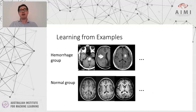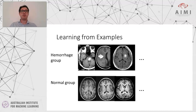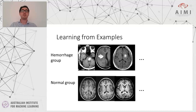Another concept that I want to show you is related to this example. Let's say we want to build a classifier to differentiate two different groups of images — one of them is T1 images of hemorrhages and the other one is T1 images of normal patients — and let's say we train a model on those images.